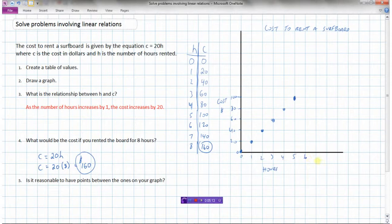Or we could go on our graph and continue the points on our graph. And this would become $120, $140, $160. So now if we're renting for 8 hours, the point says this should be $160. So the cost if we rent the board for 8 hours, $160.